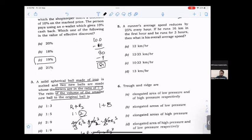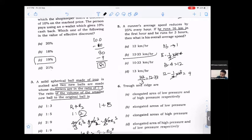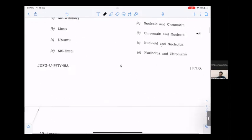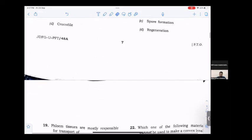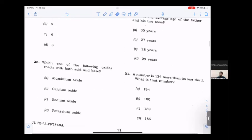A runner reduces his speed by 25% per hour. Starting at 16 km/hr in first hour, second hour becomes 16 minus one fourth into 16, which is 12. Third hour, 12 minus one fourth of 12 equals 9. Average speed is 16 plus 12 plus 9 equals 37, divided by 3 hours, which is 12.33 km/hr.